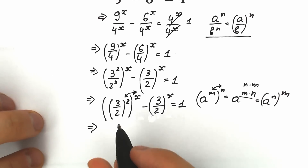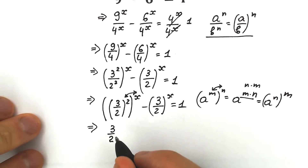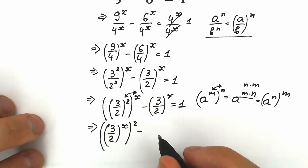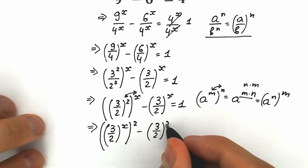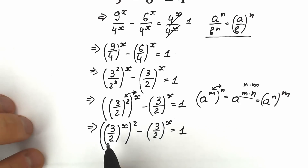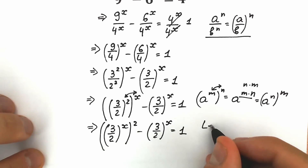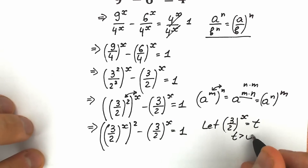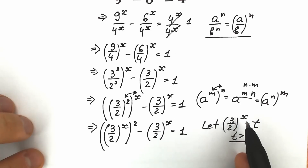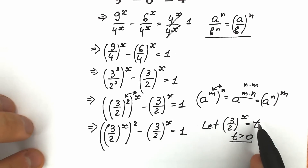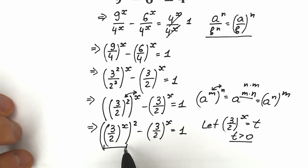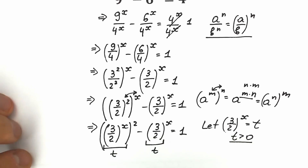Now the key moment: we let t equal (3/2) to the power x. Note that t must be positive, because exponential functions always produce positive values — no matter whether the base is greater than or less than 1. So (3/2) to the x is our t in both places. As a result, we get a quadratic equation: t squared minus t — don't forget the 2 becomes a squared — minus 1 equals 0.